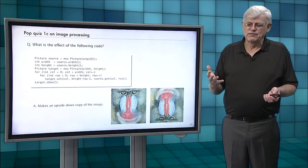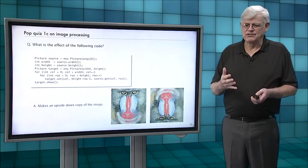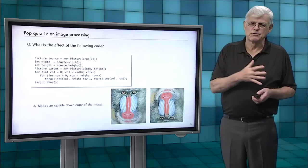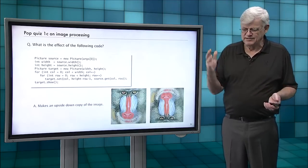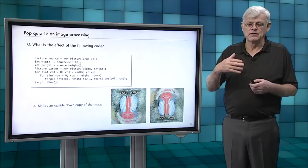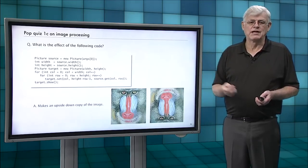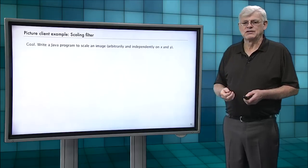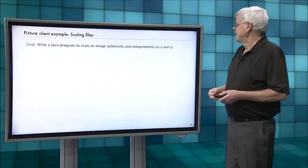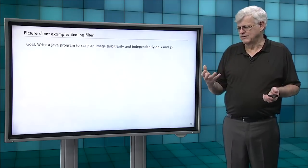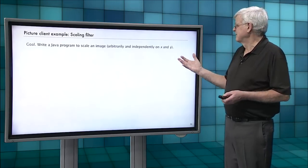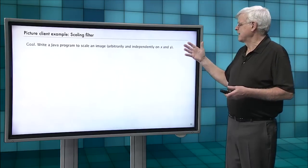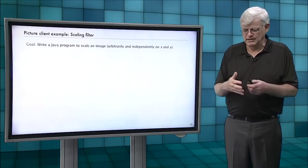But lots of our pixel processing programs have this same concept of we go through for every pixel and set it to some value. Now maybe it's a value that is a function of a value in some source. So we're using, this is a classic example, a scaling filter. And this one is useful in lots of context. So what we want to do is write a Java program that will scale an image kind of arbitrarily and independently.